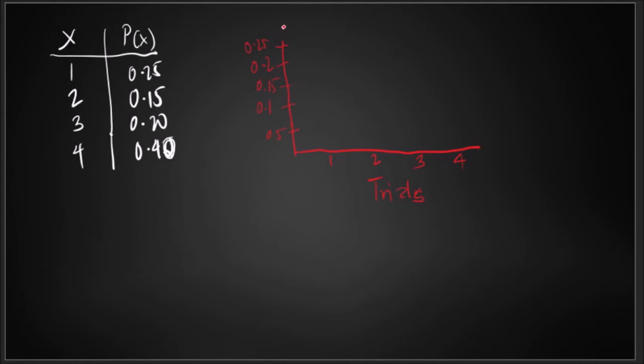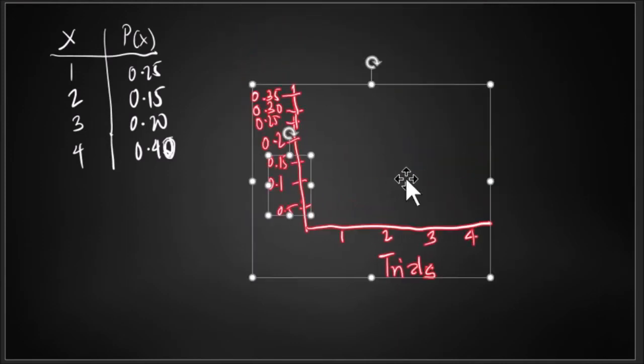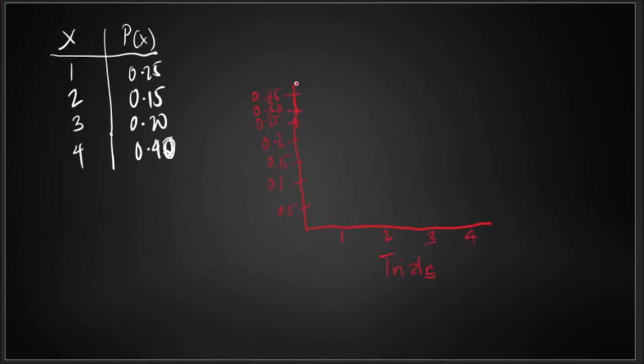0.30, 0.35. Maybe we should move it here. Let's just assume that it is scaled because we have run out of real estate. So for the first, you have here 0.25, so this is the bar, this is the bar for the first attempt.